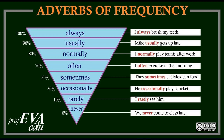'I often exercise in the morning' — the adverb 'often' shows 70% frequency of action. 'They sometimes eat Mexican food' — 'sometimes' shows 50% frequency. 'He occasionally plays cricket' — 'occasionally' shows 30% frequency of action. 'I rarely see him' — 'rarely' shows only 10% frequency of action.